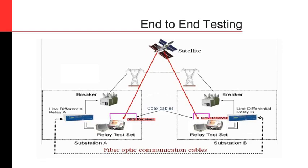In addition to the equipment, you need your test cases and the people. Keep in mind that end-to-end testing is not the typical testing you do with a relay where it's just the tester and the relay alone. In this case, you need to have active communication with the other side of the line. You also need whoever developed the test cases available on call in case something comes up. Whether you are new to end-to-end testing or an experienced engineer, this is what you will see in most cases.